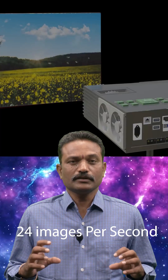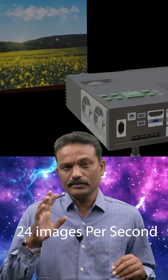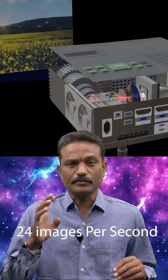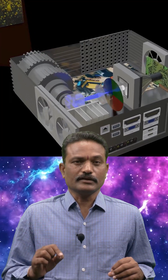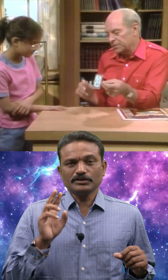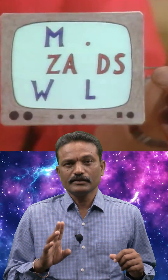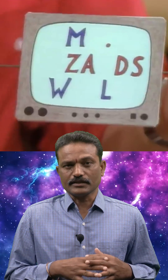A motion picture is called 24 frames because we see 24 individual photographs on the screen from the projector. We are able to see the continuity of the images because of the persistence of vision. The human eye can see two different images separately when there is a time lapse of 1/16 of a second between them.